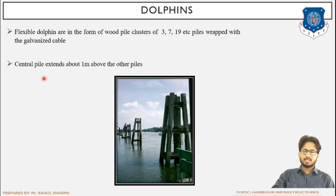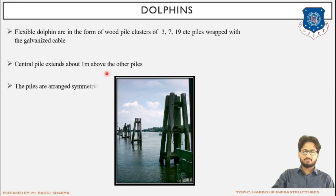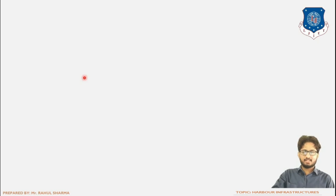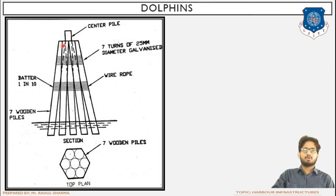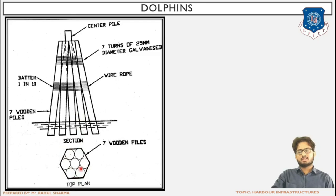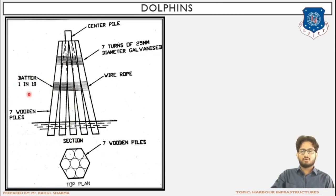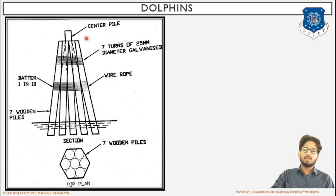The central pile extends one meter above the other piles, as seen in the previous image. Piles are arranged symmetrically on both sides. This view shows the center pile that is one meter above the rest of the bunch. The diagram shows a section (side view) and a plan (top view) with seven piles shown. The slope indicated is 1 in 10 — for every 10 horizontal, 1 rises vertically.